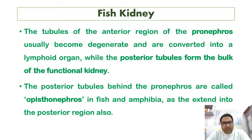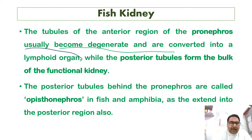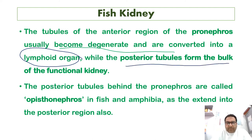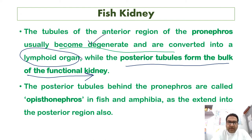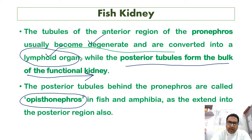In fishes, the tubule of the anterior region of the pronephros usually becomes degenerate and is converted into a lymphoid organ, while the posterior tubule forms the bulk of the functional kidney. The posterior tubules behind the pronephros are called the opistonephros, and in the case of fish and amphibia it extends into the posterior region as well.